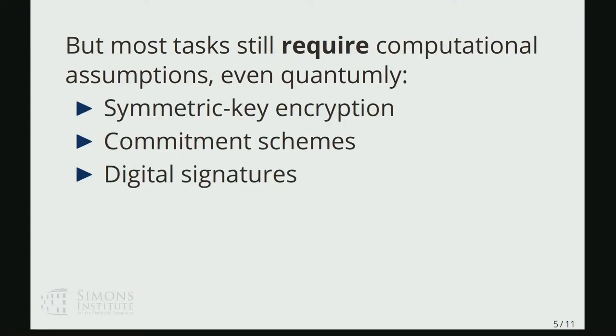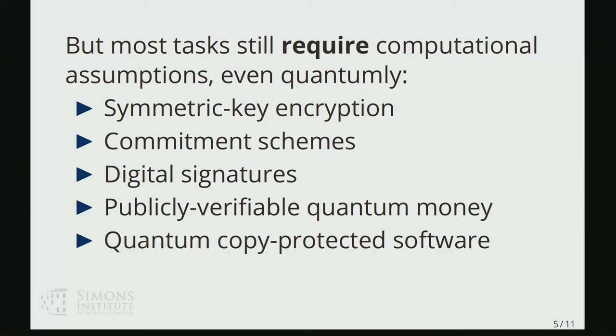you cannot have information theoretic proofs, including things like symmetric key encryption, commitment schemes, and digital signatures, these sort of minicrypt primitives that we know how to build classically from one-way functions, but also for some of these like stronger kind of inherently quantum primitives like publicly verifiable quantum money or quantum copy protected software, again, you can show that you cannot have information theoretic instantiations of these primitives.